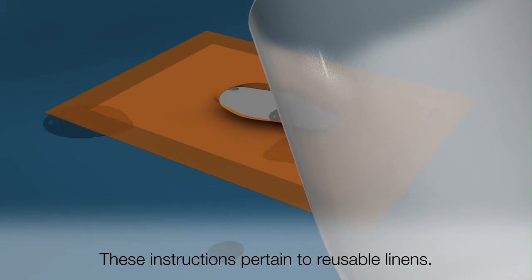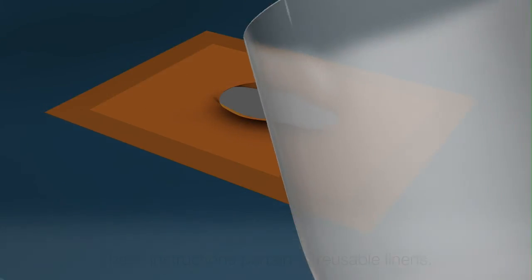First, wet the material, then peel the incise drape away from the linens, dispose of the incise drape, and process the reusable linens as usual.